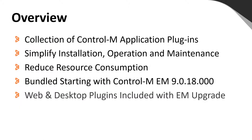So what exactly is Control-M Application Pack? It is a collection of Control-M Application Plugins, formerly referred to as Control Modules or CMs. This architecture was designed to simplify the installation, operation, and maintenance of these modules, and to reduce resource consumption on the Control-M Agent. It was bundled starting with Control-M Enterprise Manager Server version 9.0.18 base release, and the web and desktop plugins are included with each EM upgrade.